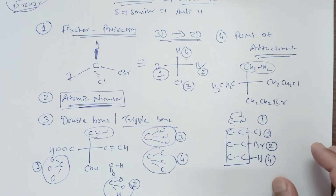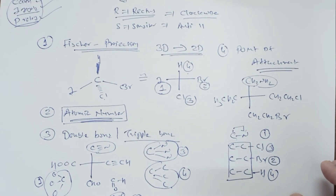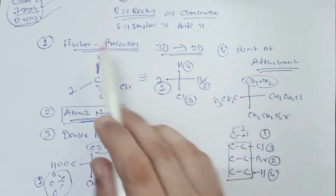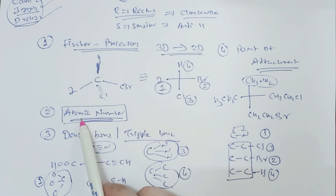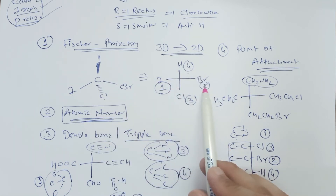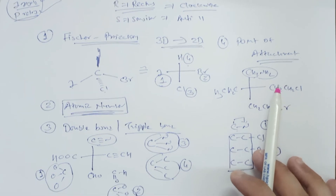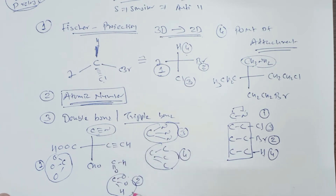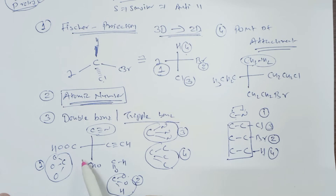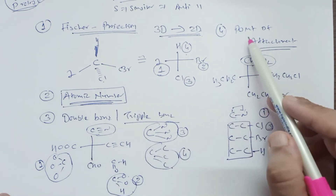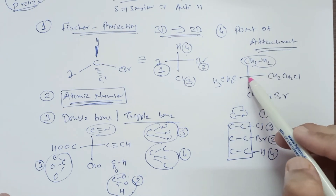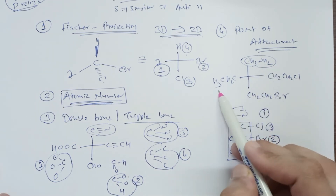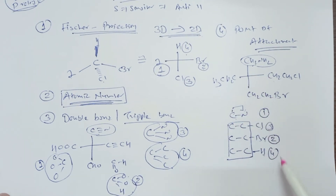To summarize, these are the four main rules for assigning RS nomenclature. First, convert the 3D structure to 2D using Fischer projection. Second, the atom with the higher atomic number gets higher priority — I, then Br, then Cl, then H. Third, consider double or triple bonds as duplicate atoms. Fourth, for bulkier groups, apply the point of attachment rule to determine priority order 1 through 4.